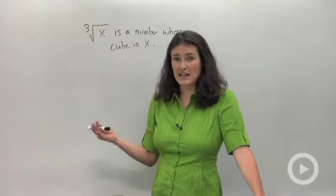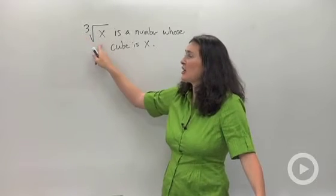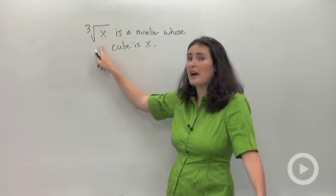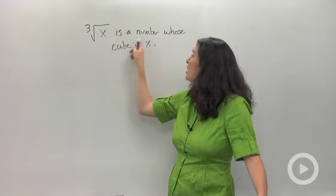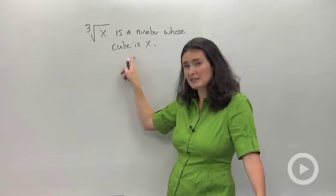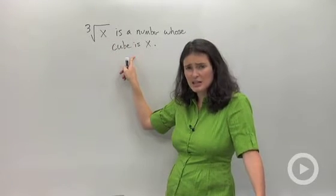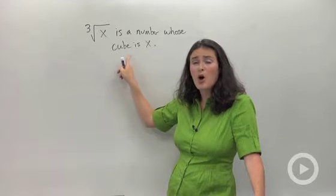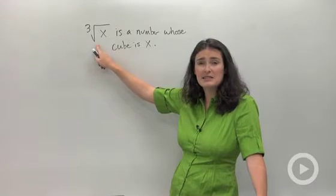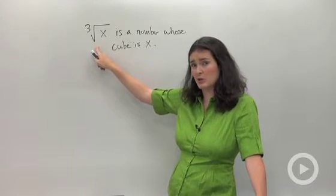First thing is notation. This is how you write the cube root of x. What it means is a number whose cube is x. If that doesn't make sense, listen carefully. This means what number times itself 3 times is equal to x.